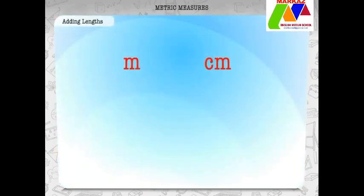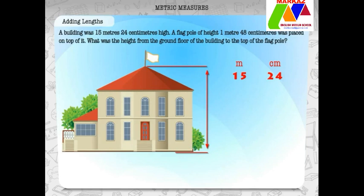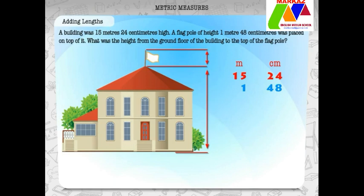Let us get into adding lengths. When we add lengths, we must use placeholders. The placeholders are meters and centimeters. A building was 15 meters 24 centimeters high. A flagpole of height 1 meter 48 centimeters was placed on top of it. What was the height from the ground floor of the building to the top of the flagpole?